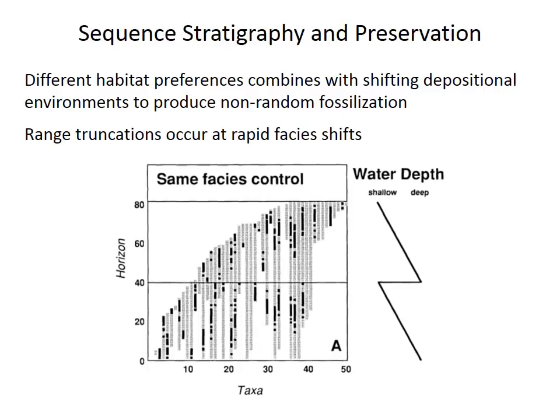To sum up, correlation is a critically important goal of biostratigraphy, but it is essential to assess sampling effects, look for sedimentation gaps, and determine habitat preferences and the effects of changing depositional environments when trying to correlate observed first appearances between different sites.